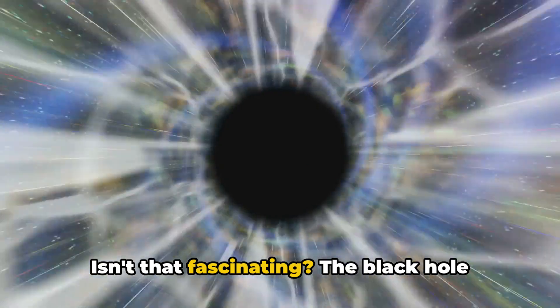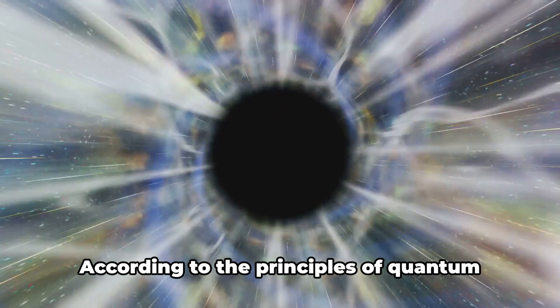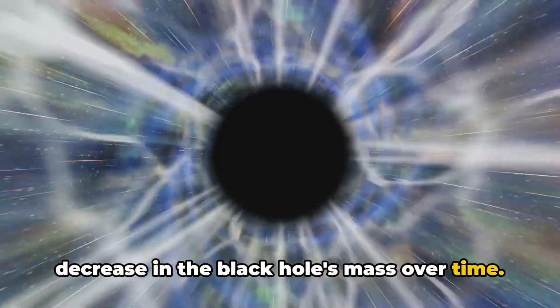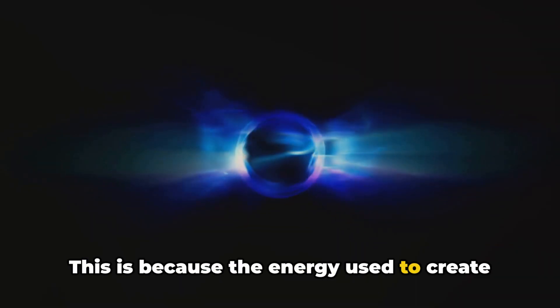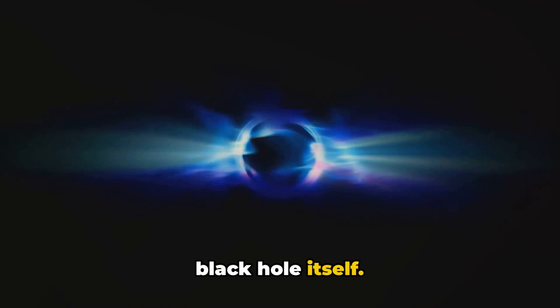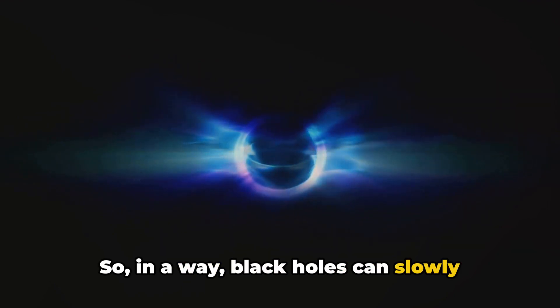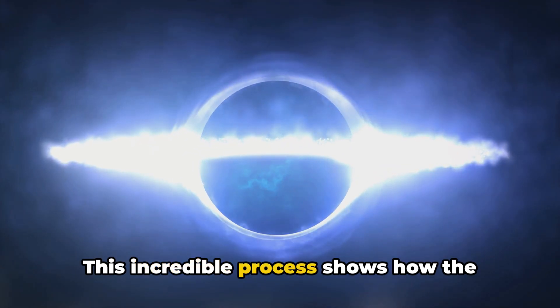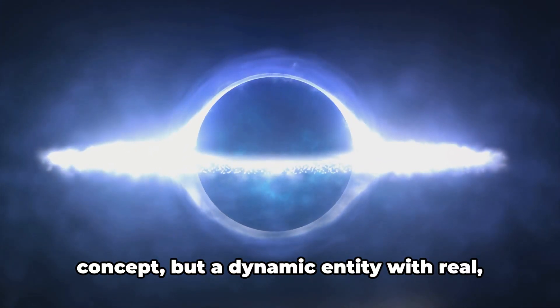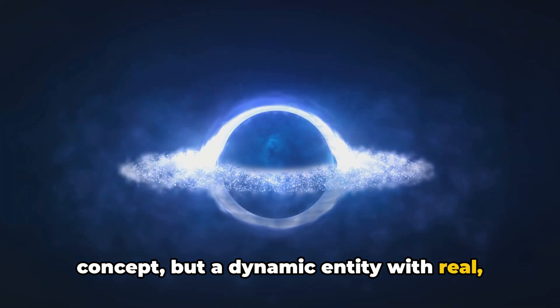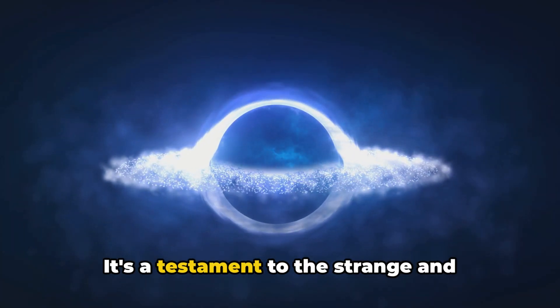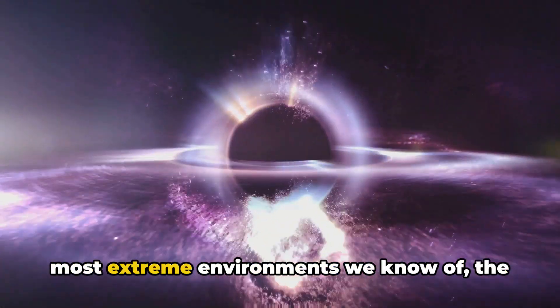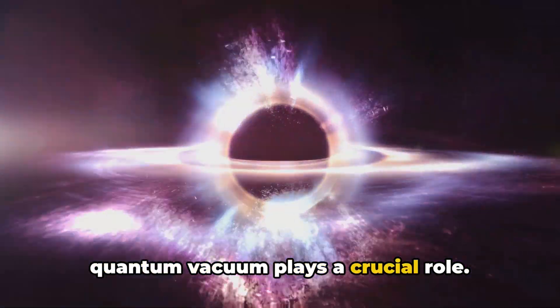Now virtual particles are a peculiar concept. They are transient particles that pop in and out of existence in the quantum vacuum, borrowing energy from the vacuum itself to materialize, only to vanish again. But what happens when a pair of these virtual particles forms near a black hole's event horizon? Sometimes one of the particles falls into the black hole while the other escapes into space. The escaping particle becomes real and can be detected as Hawking radiation.